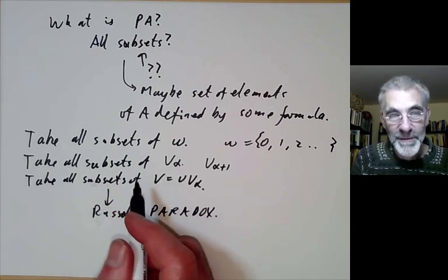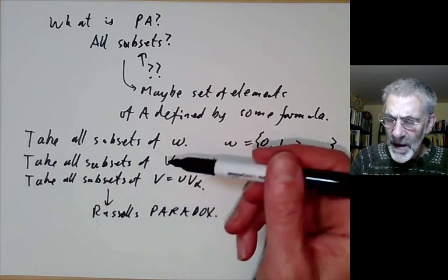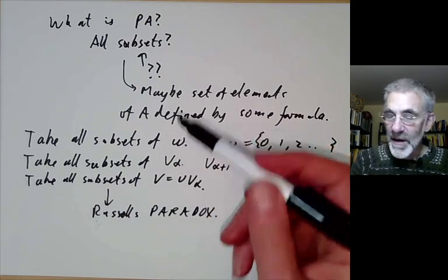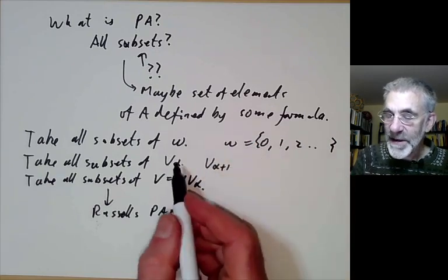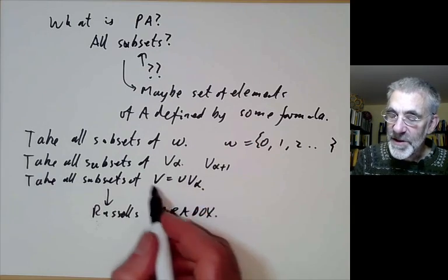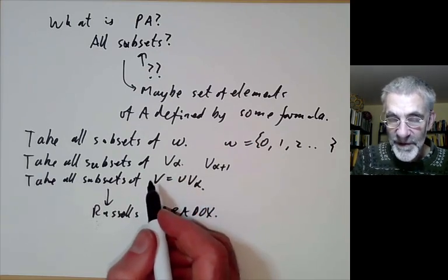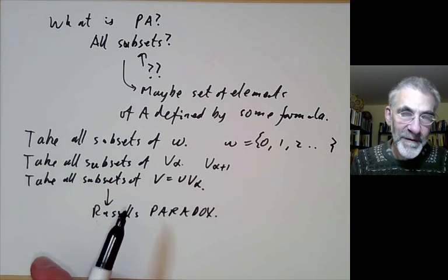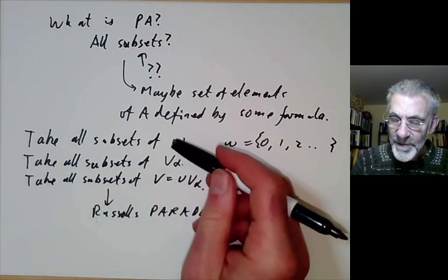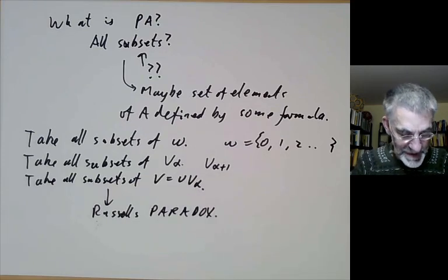If we allowed any subset of the collection of all sets to be a set then we can start looking at the set of all sets that aren't members themselves and so on. So if you want to annoy a platonic mathematician and try and get them to explain why it's legitimate to take all subsets of V alpha but not legitimate to take all subsets of the union of all the V alpha. And it's very hard to find a sort of really convincing explanation of why this is allowable but this one isn't.